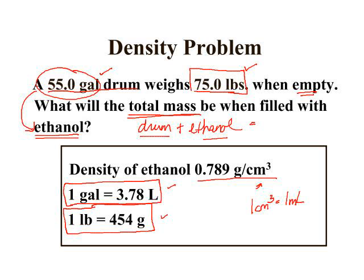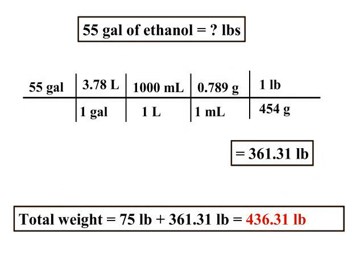They also give you that one gallon is 3.78 liters and they tell you that one pound is 454 grams. So using these conversion factors and others that you may know or may have memorized you're going to solve this problem. And this is a little more advanced so you have to take your time and look through to see the information that you have and the information that you need.